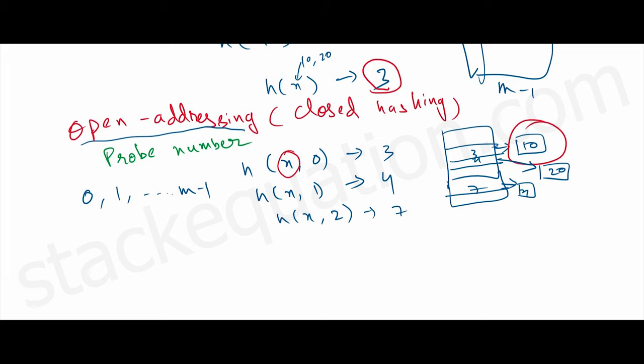For the first time it returns index 3—the first time means the zeroth time. If there is already an element present at the third index, it won't place element x there. In the next attempt it returns 4.